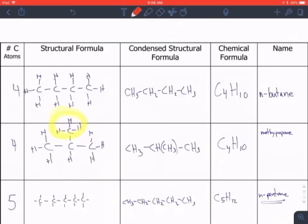We could also take one of the carbons and put it on a branch. This branch looks like a methane except it's missing an H, so we call it a methyl and that makes our name methylpropane.